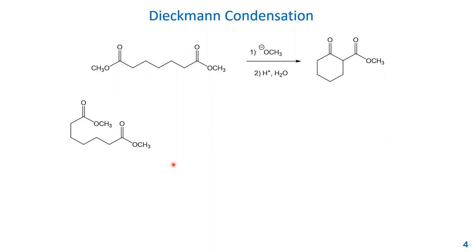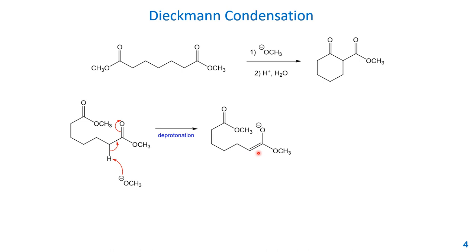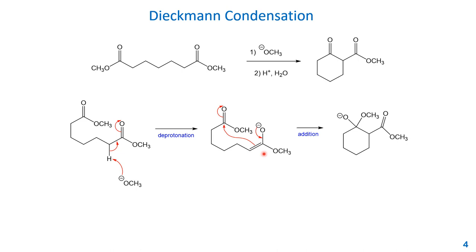The first step is always deprotonation, so we redraw this structure to make the arrow-pushing easier. The alpha proton is deprotonated by the base, methoxide. The oxygen takes the proton and pushes the electron back, pushing the pi electron to the oxygen, forming the enolate. This enolate is the nucleophile and the other ester is the electrophile. The electron from the oxygen pushes back, the pi electron attacks the carbonyl carbon intramolecularly, and the pi electron is pushed to the oxygen. This intramolecular nucleophilic addition forms the ring system with the alkoxide intermediate.